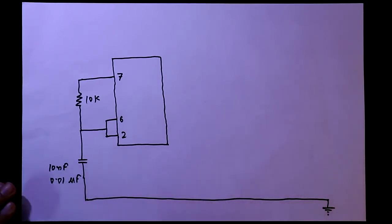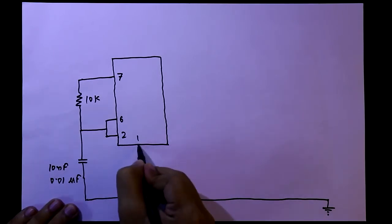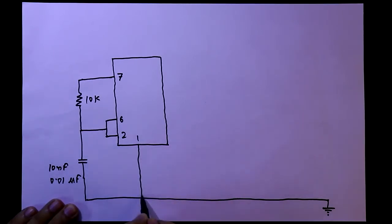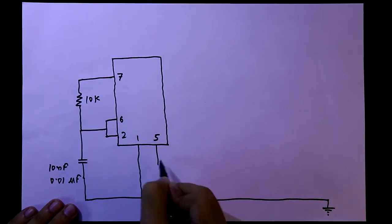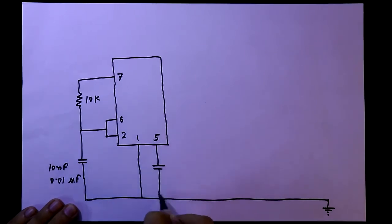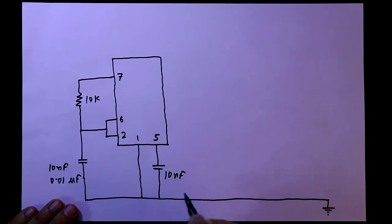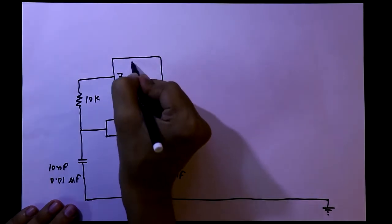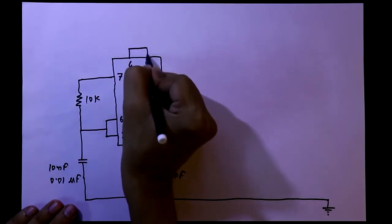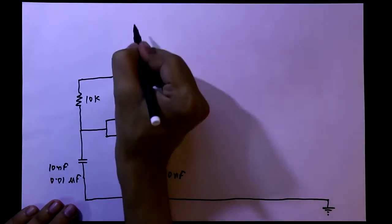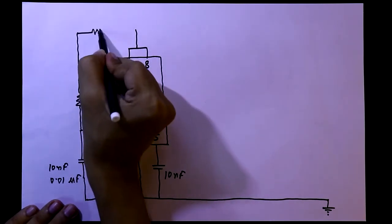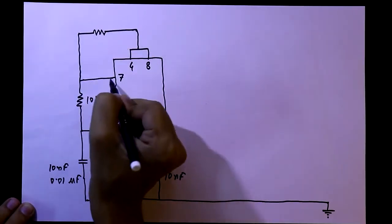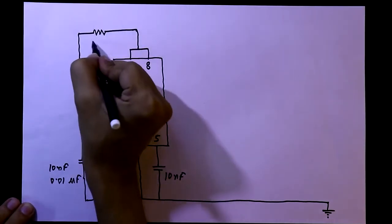Pin number 1 is connected to the ground. Pin number 5 is also connected with a 10nF capacitor and then to ground. Pin number 4 and 8 are both connected together. One 2.2kΩ resistor is connected between positive voltage and pin number 7.